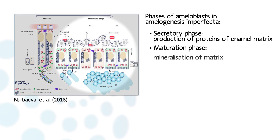In the maturation phase, ameloblasts mineralize this matrix and then mature it by removing almost all the proteinic scaffold via enzymes such as KLK4 and MMP20, to allow hydroxyapatite crystal growth toward 96–98% mineral content.